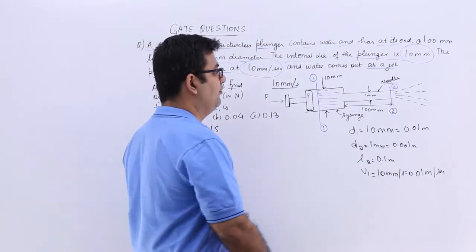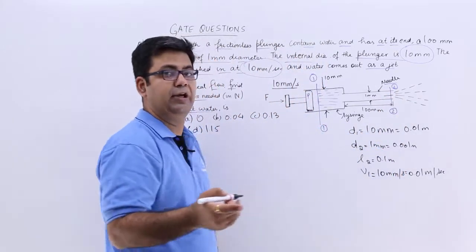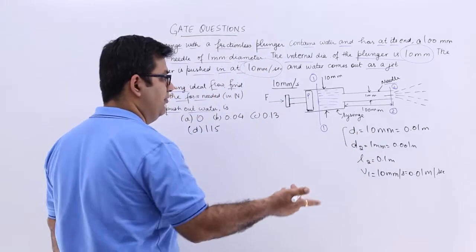Now we need to find out the velocity at section 2. So again we will apply the continuity equation. So we have the diameters. Let's keep it like that, no need to find the area.